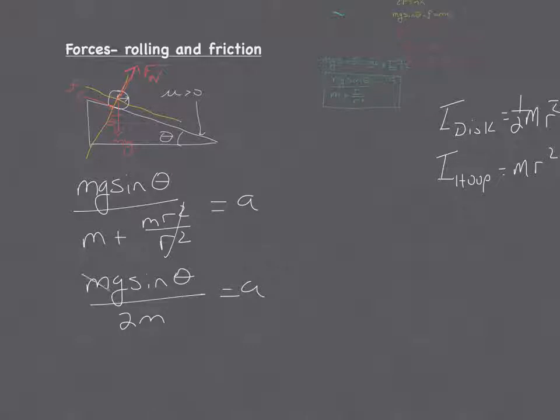You get g sine theta over 2. Now, if we were to look at the rate of acceleration of just a block there, we would just end up with a equals g sine theta.